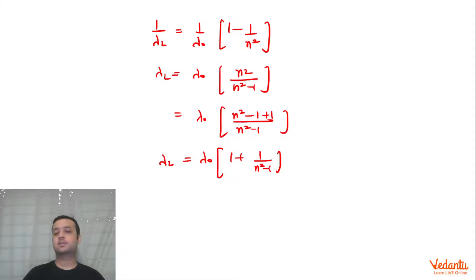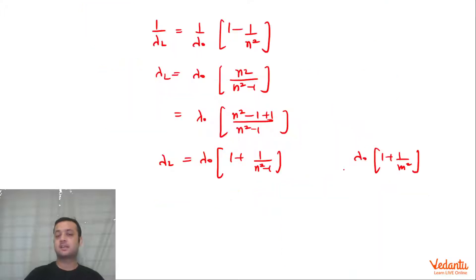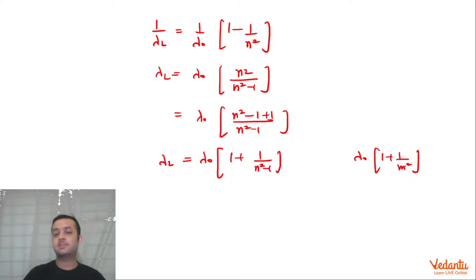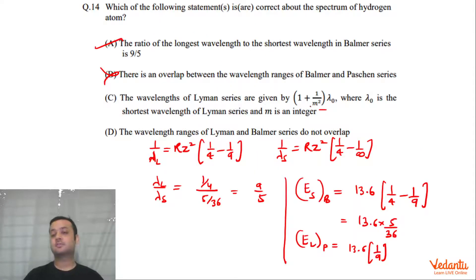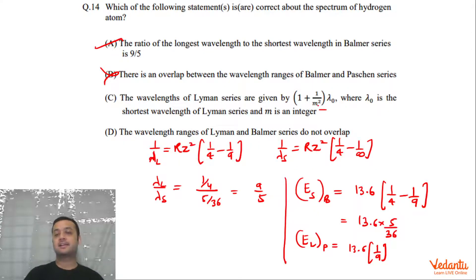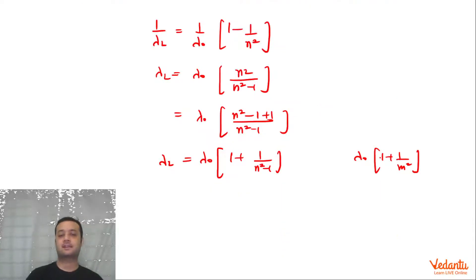Now we need to compare λ₀ × n²/(n² − 1) with the given expression λ₀ × (1 + 1/m²) = λ₀ × (m² + 1)/m². For these to be equal, we need n²/(n² − 1) = (m² + 1)/m². Testing n = 2 gives 4/3, and we need (m² + 1)/m² = 4/3, so m² = 3, meaning m = √3, which is not an integer. Therefore Option C is incorrect because m would not be an integer.